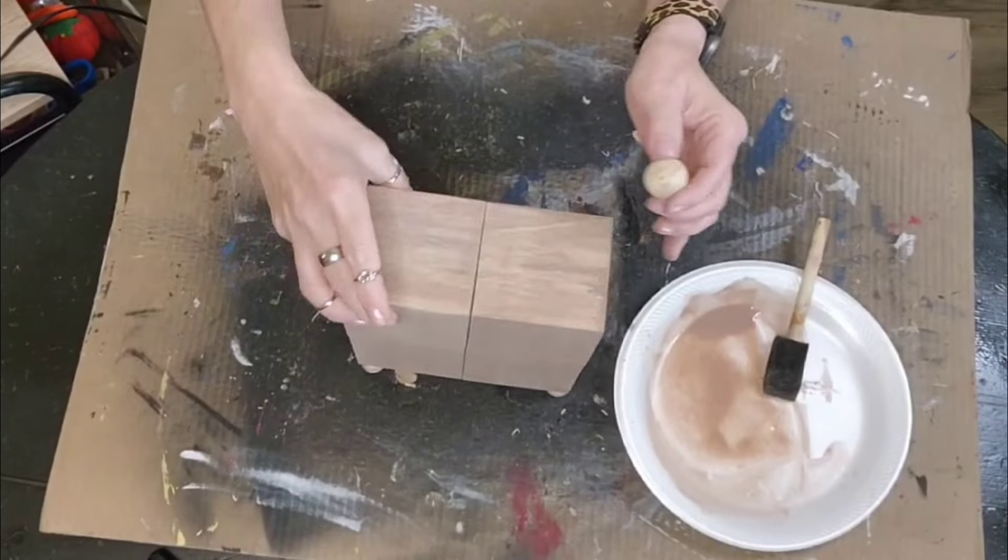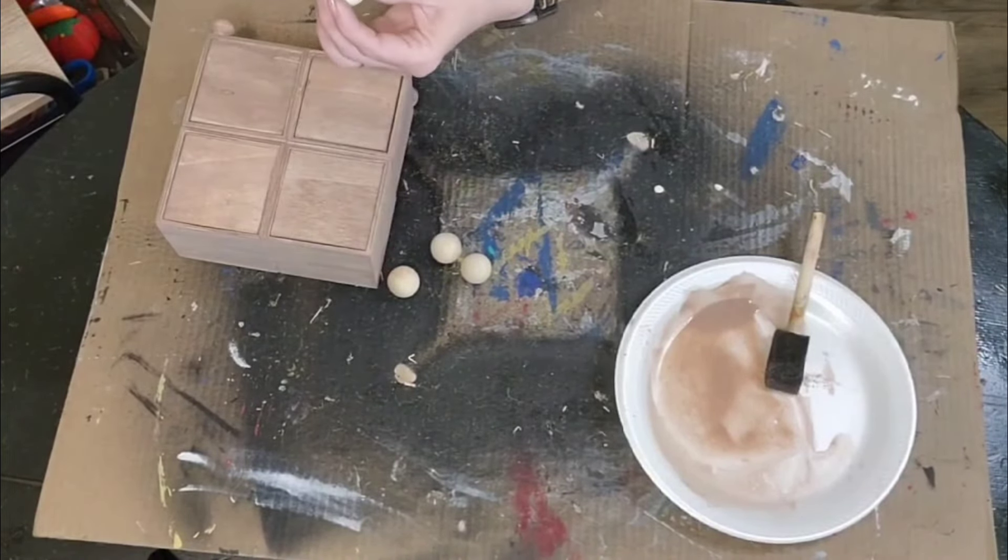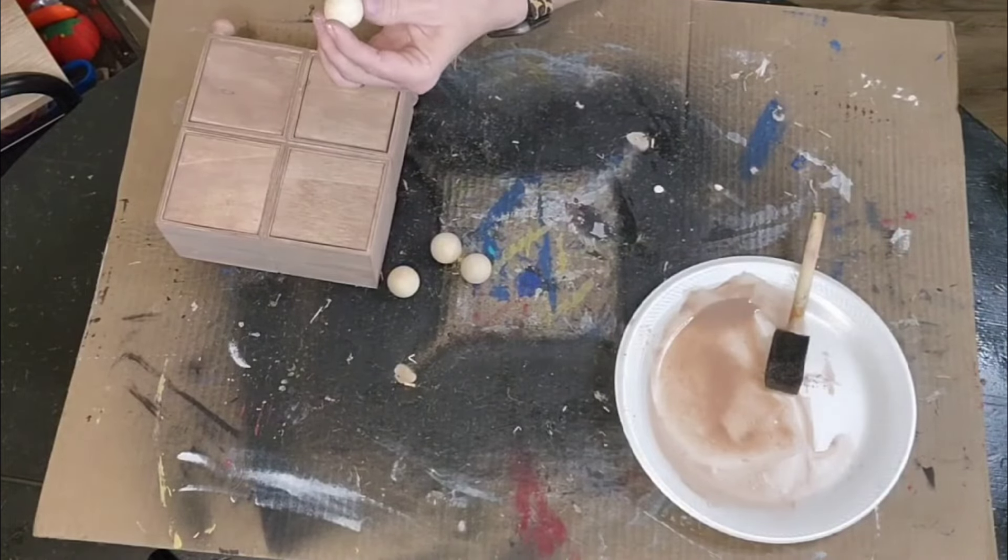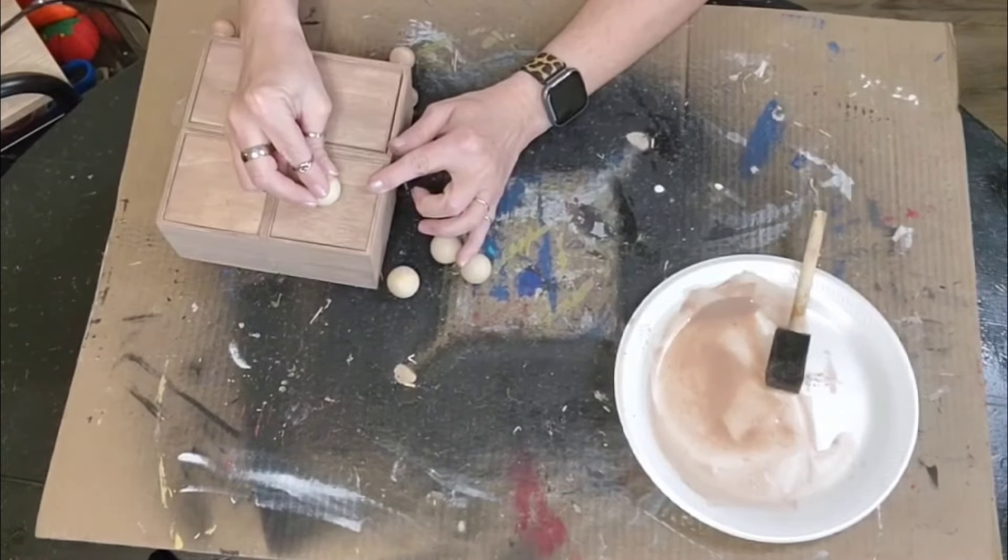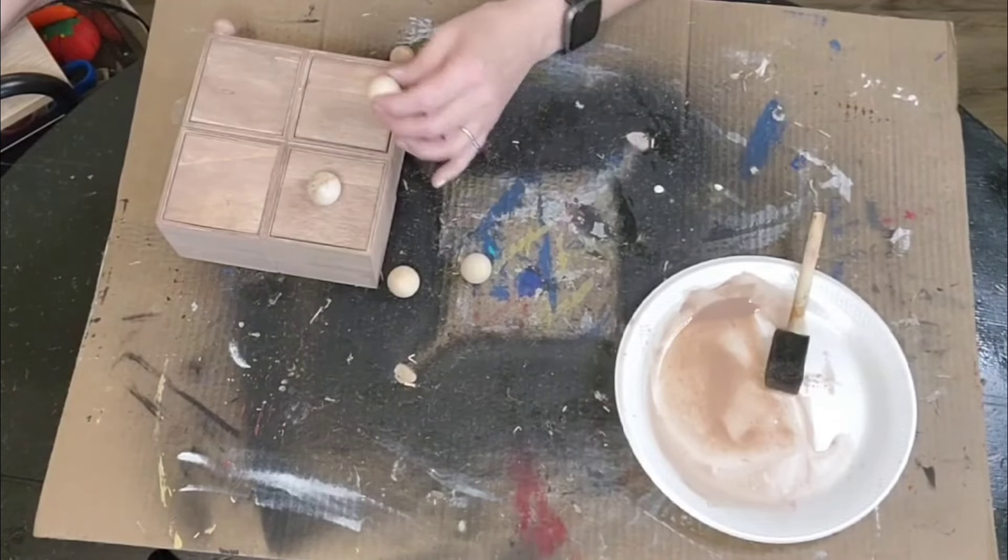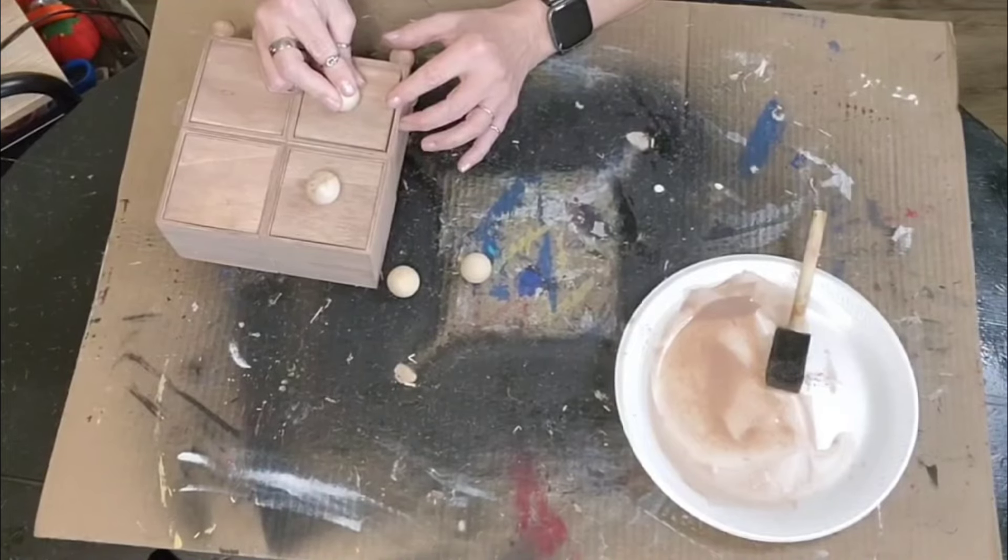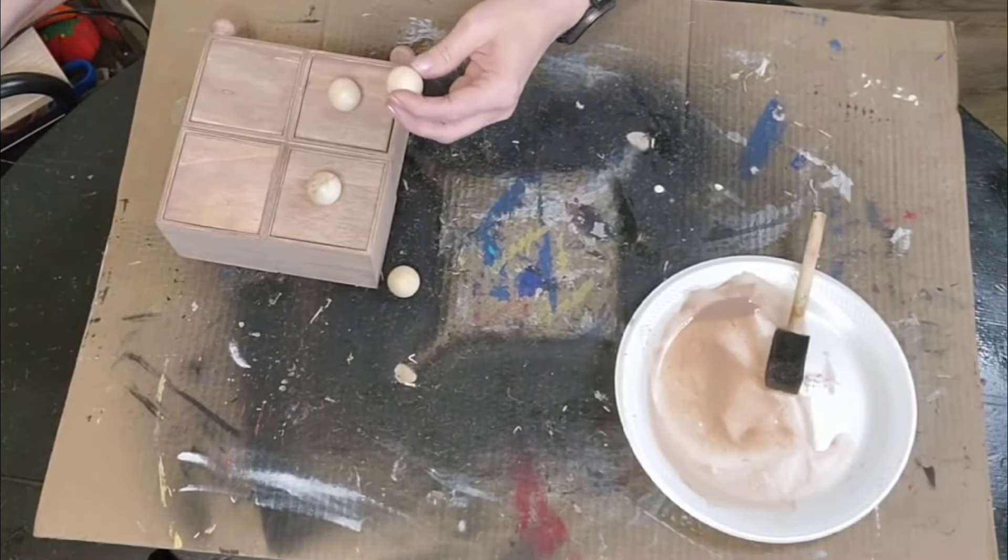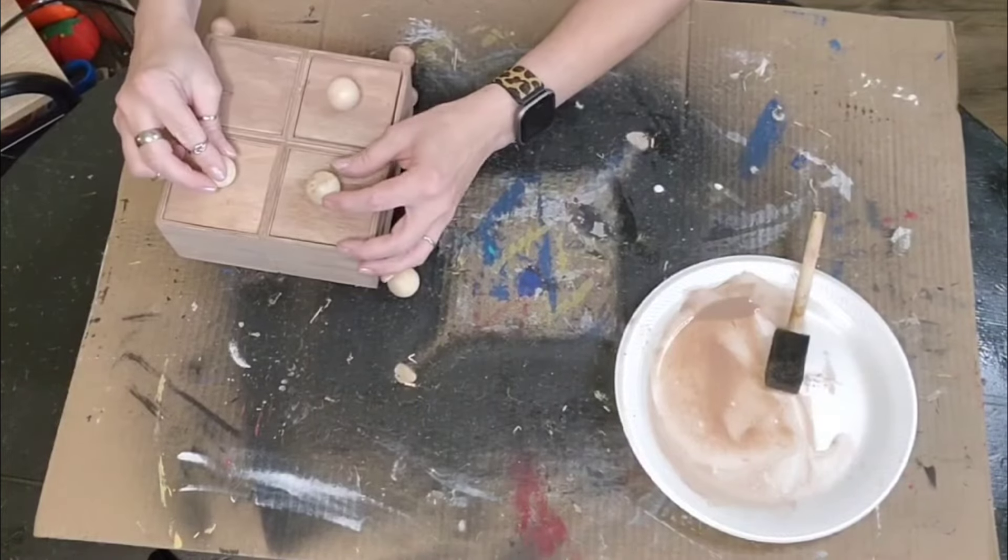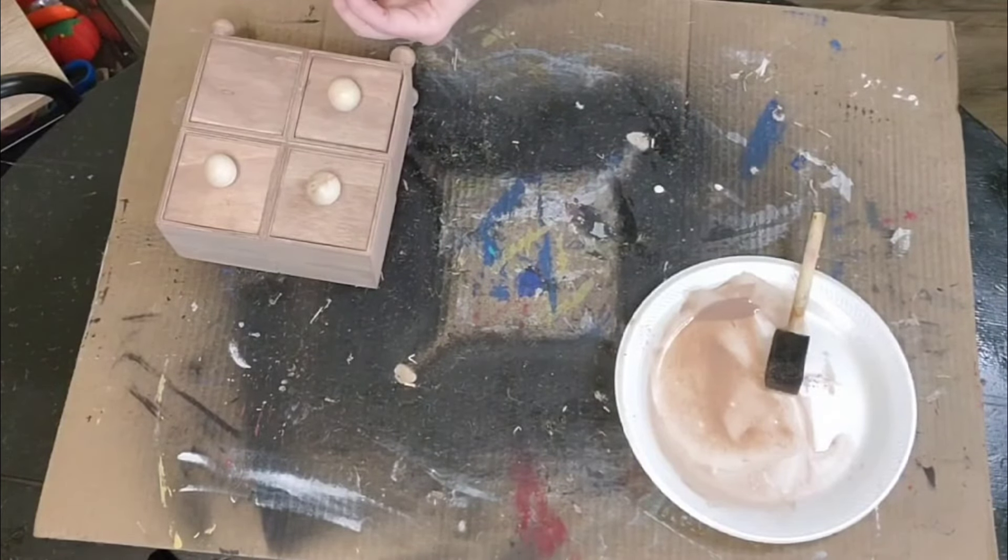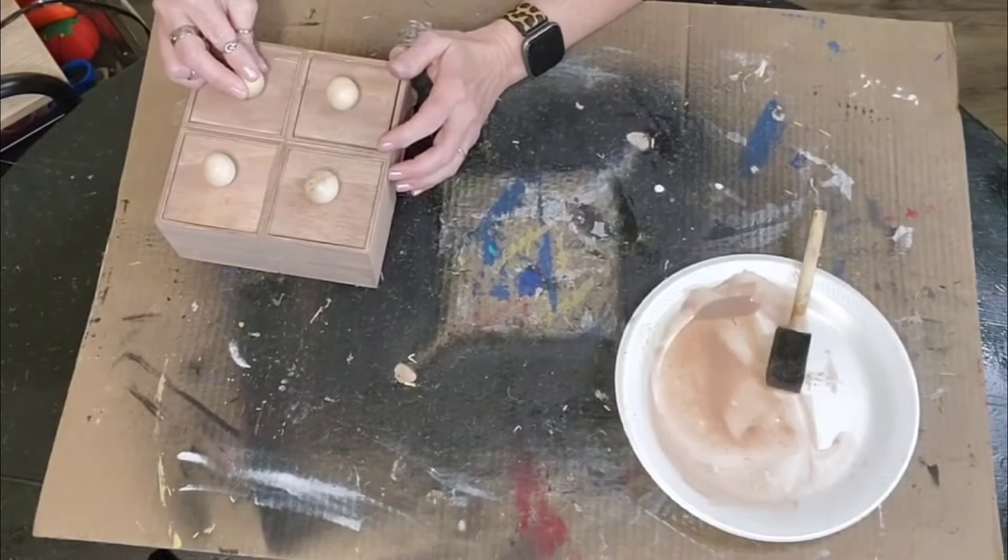I had some wooden knobs that I purchased off of Amazon. I know Temu sells them. They are very cost effective to buy in bulk when they have their sales, especially Temu has their 99-cent sales. And I took some wood hot glue and I glued one of these wooden knobs to the very center of each drawer so that I could have something to grab onto and be able to easily pull the drawers out.